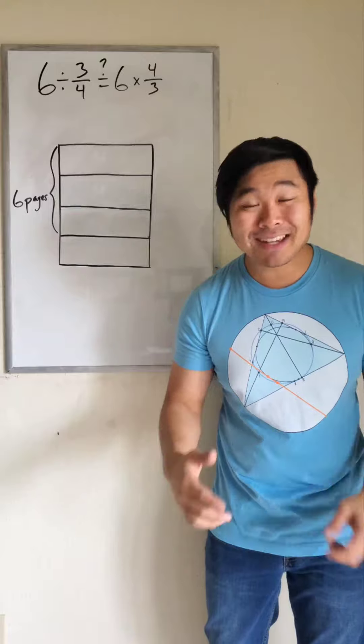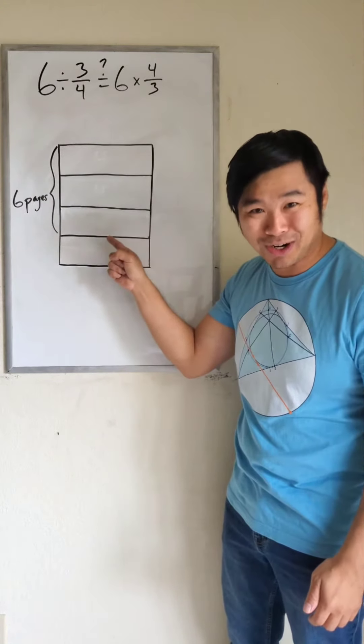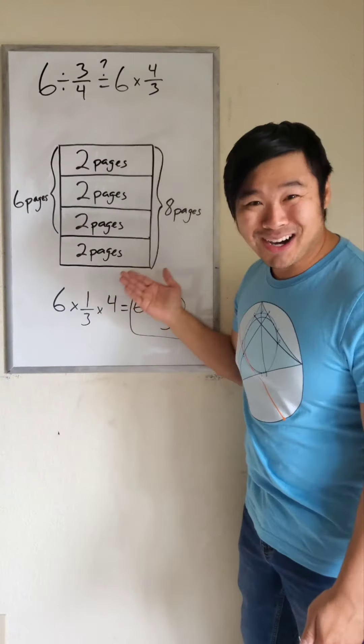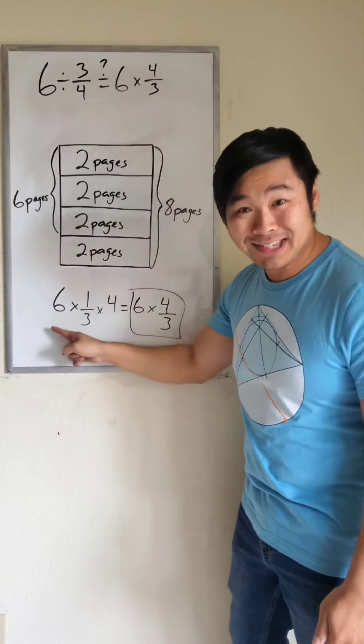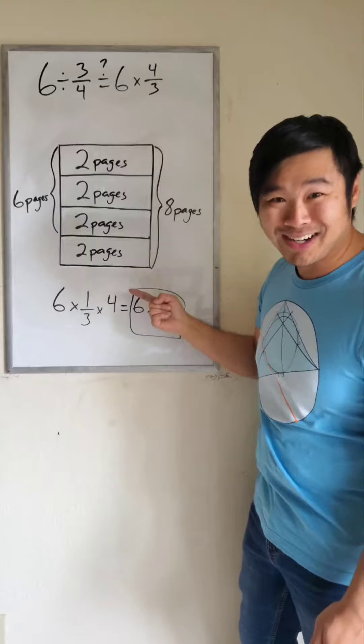So if 3 fourths of your essay is 6 pages, we would divide by 3 to figure out what each box is worth. 6 pages divided by 3 is 2 pages. And there are 4 boxes. So we first divided 6 by 3 to figure out what 1 box is worth, and then we multiply by 4 because there are 4 boxes.